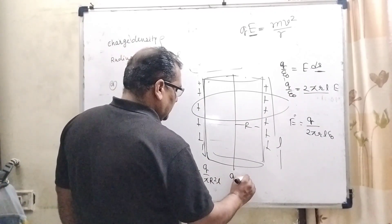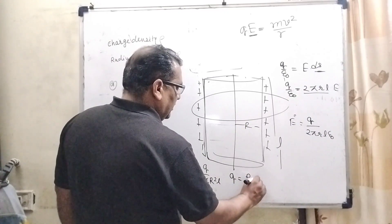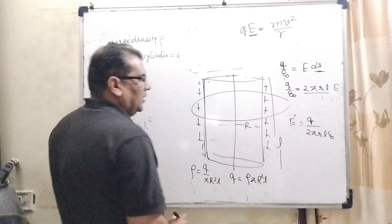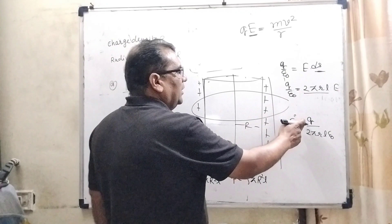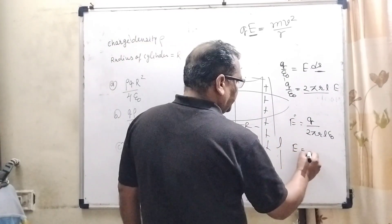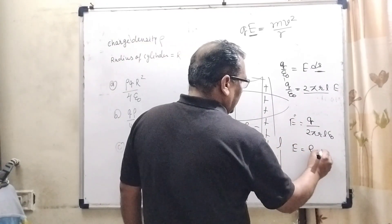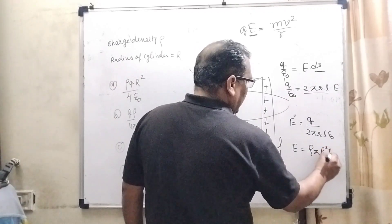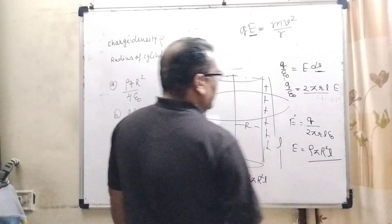Now substitute this value. Substitute this value in the place of Q. E = ρπR²L. But here, the charged particle is on the surface. So it means small r equals capital R.